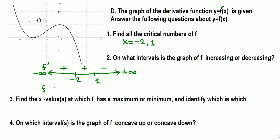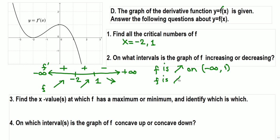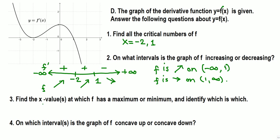A positive derivative means the function is increasing, and a negative derivative means decreasing. So f is increasing on negative infinity through 1, and f is decreasing on 1 through positive infinity.